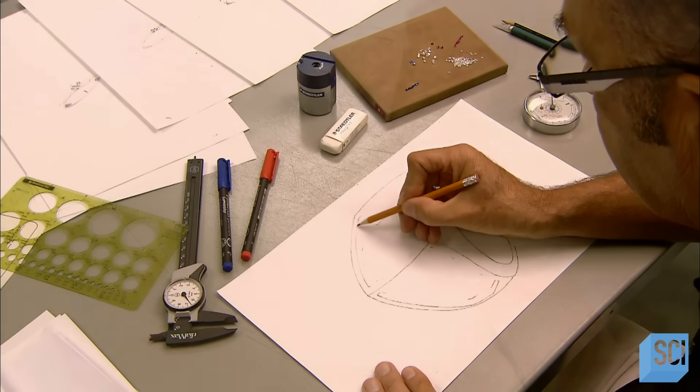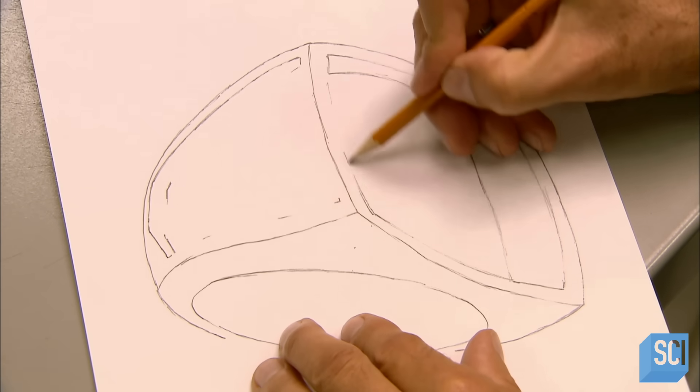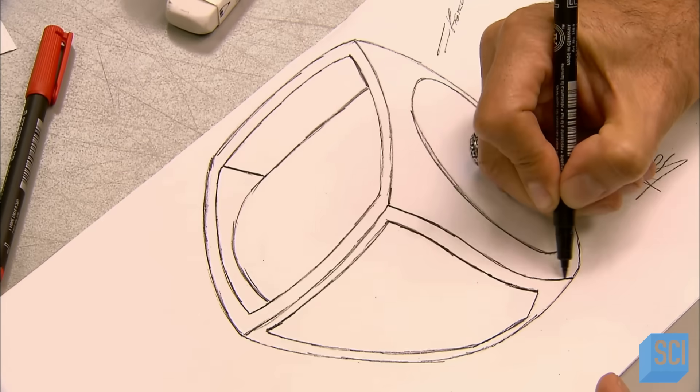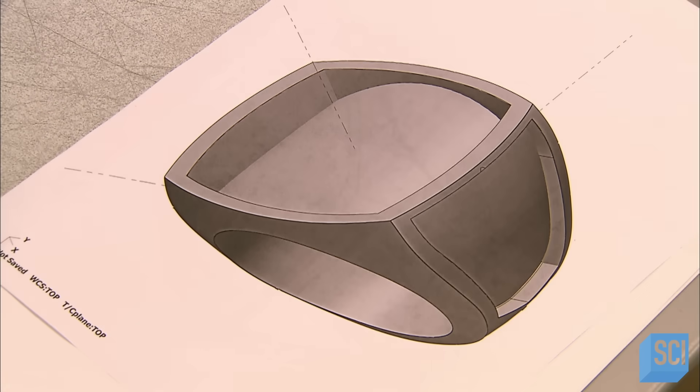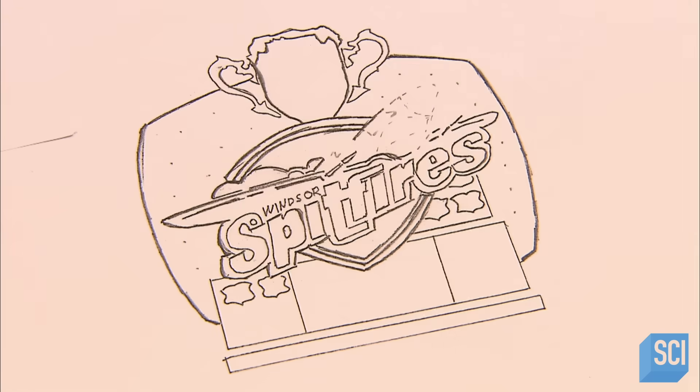For each style, a jewelry designer first sketches the ring's base, the overall shape of the ring minus the decorative elements. Then an industrial designer transforms the sketch into a three-dimensional computer drawing.